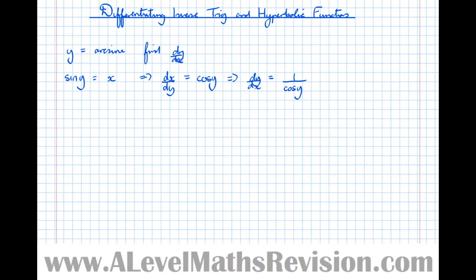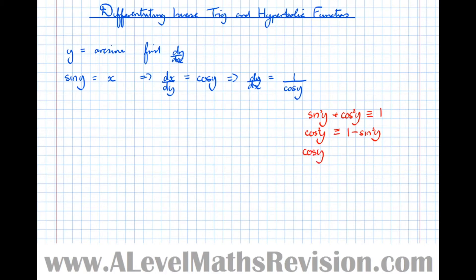Now we're going to take a standard trig identity. We've got sin²y + cos²y ≡ 1, which means cos²y ≡ 1 − sin²y. Unsquaring both sides, cos y ≡ ±√(1 − sin²y).